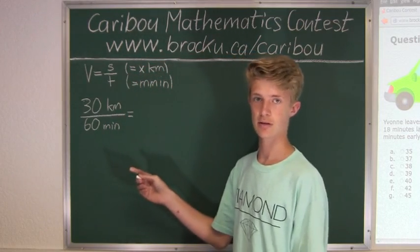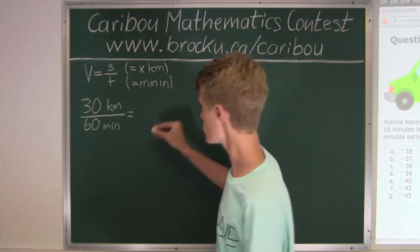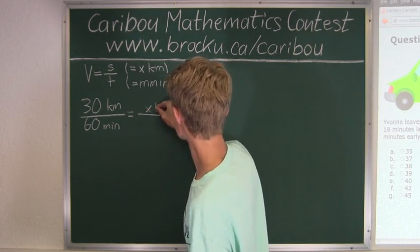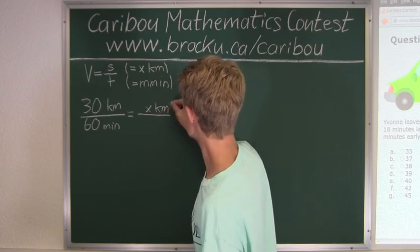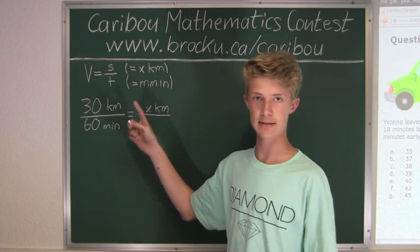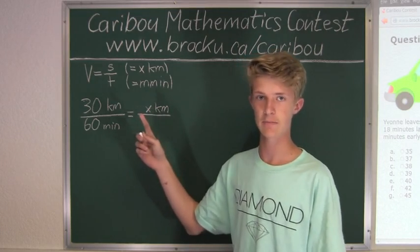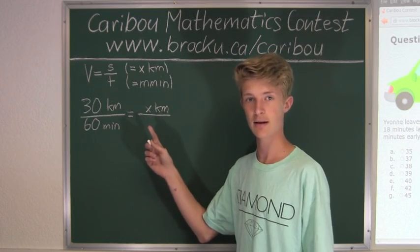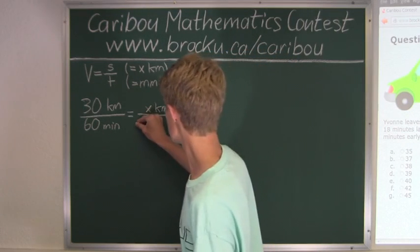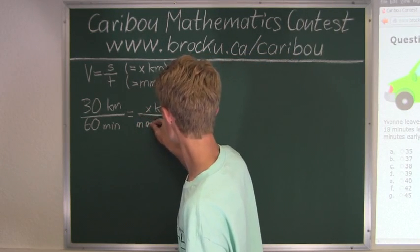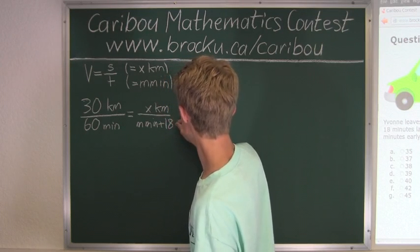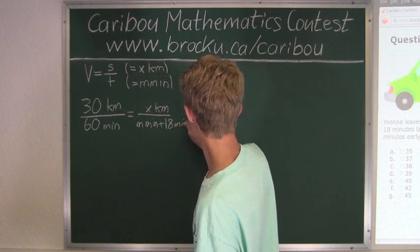And now this equals the distance, which is X kilometers divided by, and then it would be N minutes, but that's when she arrives exactly on time. Since she is 18 minutes late, then it will be N minutes plus 18 minutes.